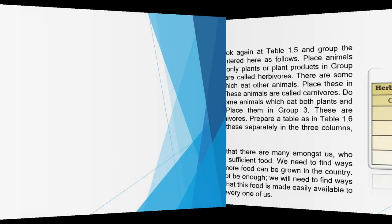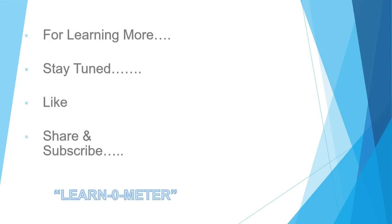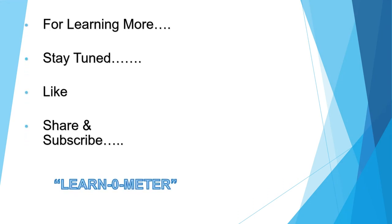Chapter का summary: India के different regions में खाए जाने वाले food में बहुत variation है। हमारे food के main sources plants और animals हैं। जो animals सिर्फ plants खाते हैं वो herbivores हैं, जो सिर्फ animals खाते हैं वो carnivores हैं, और जो दोनों खाते हैं वो omnivores हैं। This is all for this chapter — like, share और subscribe करें Learn-O-Meter को।